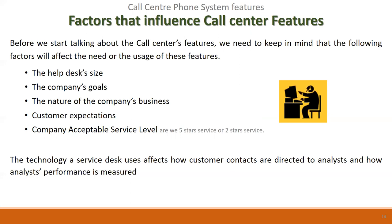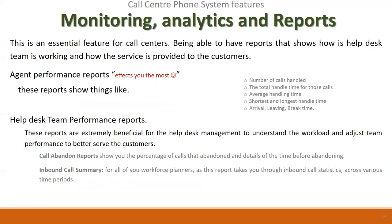The type of customer affects the acceptable service level. Random retail customers may tolerate a five-minute wait, but VIP high-spending customers require a different level of service. In many large companies, a government or big-account customer won't call the service desk at all — they have an account executive with a private number for one-to-one contact.